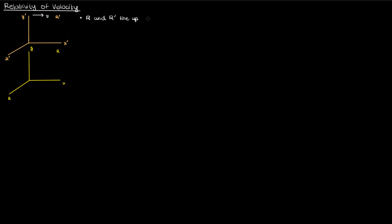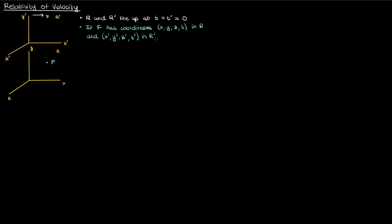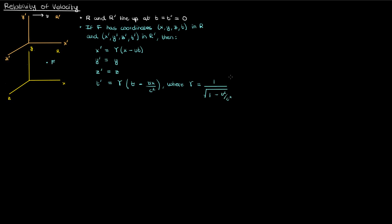At time 0 these reference frames line up perfectly. Now if there's some event f that occurs at some random time after time 0, and the spacetime coordinates of f in the reference frame r are x, y, z, and t, while the spacetime coordinates of f in the reference frame r' are x', y', z', t', then the primed coordinates are related to the unprimed coordinates via the Lorentz transformation equations. These equations allow us to relate the coordinates between two reference frames traveling at a constant velocity relative to each other.